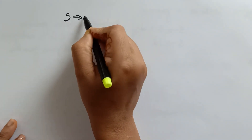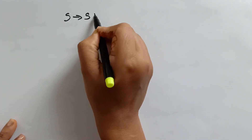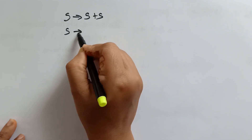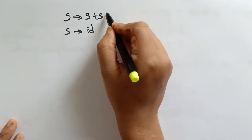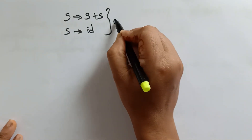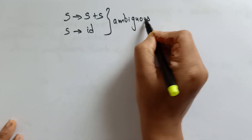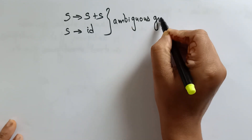Since it is generating an ambiguous grammar, I need to construct an unambiguous grammar for the given productions. So you have to apply left recursion. Whatever the productions given — s plus s and s determines id — is the ambiguous grammar.